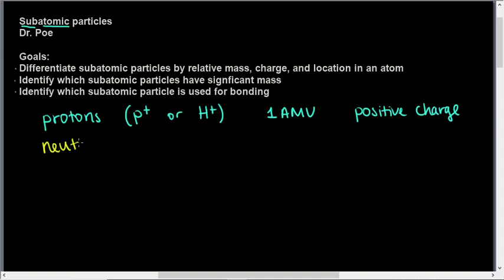Neutrons are neutral in charge. We abbreviate them N0. They have a mass of one atomic mass unit and a neutral charge, so neither positive nor negative.